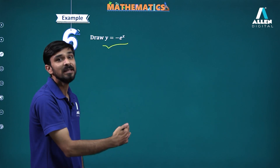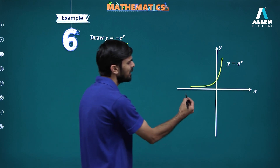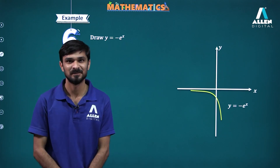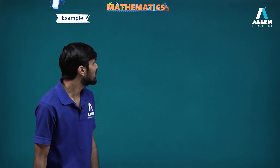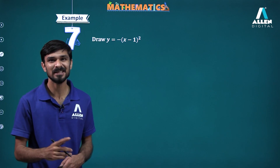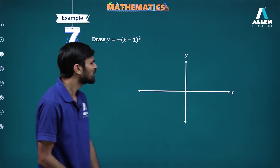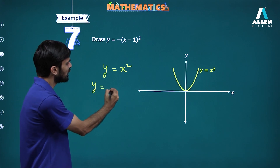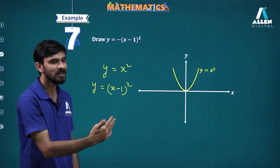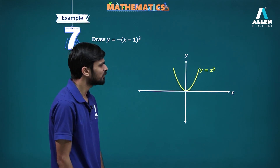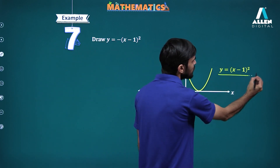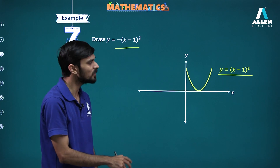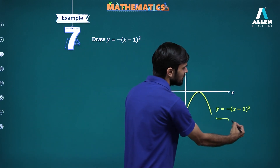For example, to draw the graph of y equal to minus e to the power x — this is e to the power x — take the reflection along the x-axis and that will be your graph of minus e to the power x. Another example: y equal to minus (x minus 1) squared. We know the graph of y equal to x squared. For y equal to (x minus 1) squared, shift one unit towards the right. Then for the negative of that, take the reflection of this graph along the x-axis — flip it — and that will be your required graph.